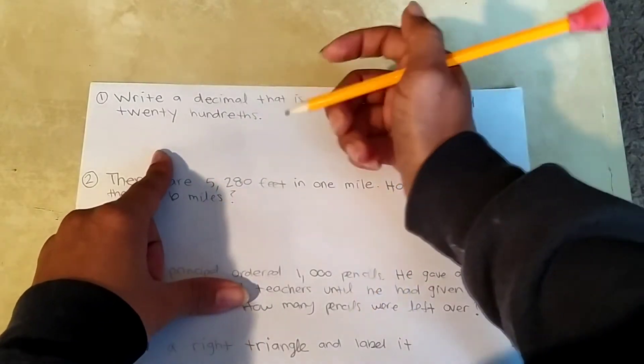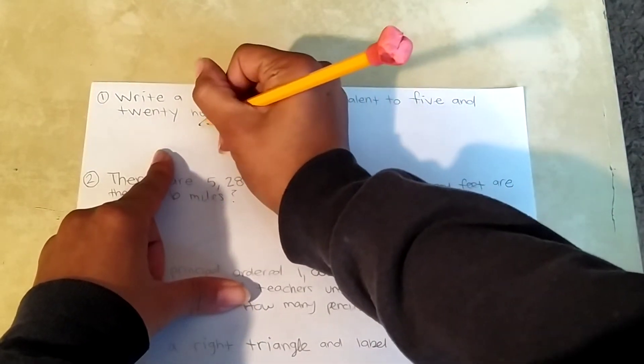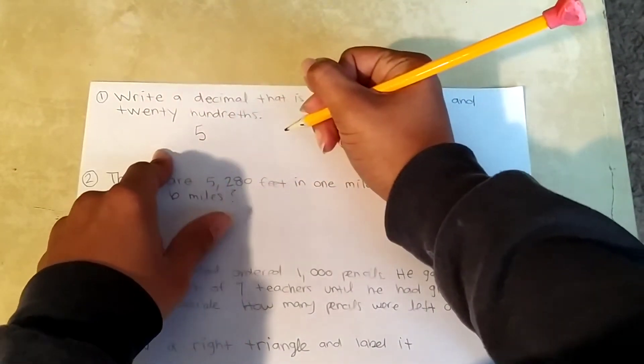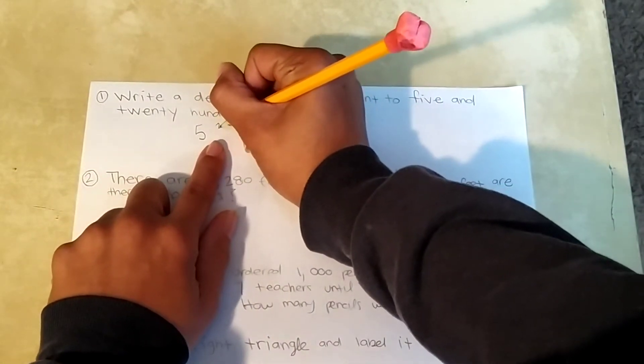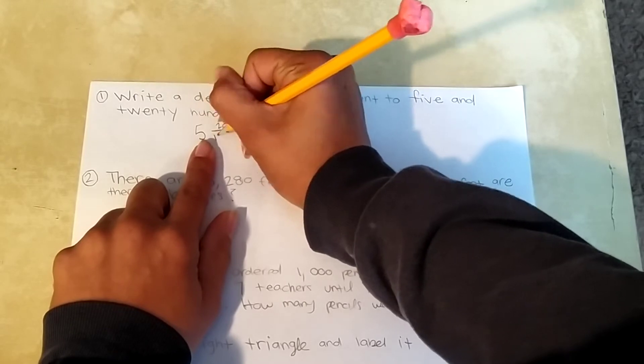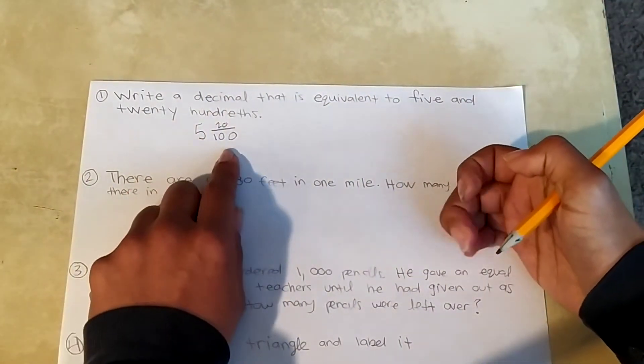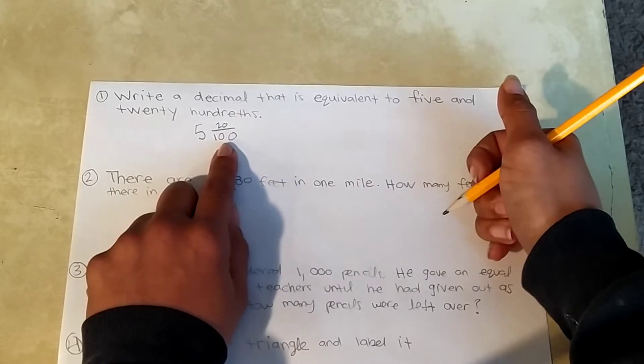So 5 and 20 hundredths. So I write my 20 and my hundredths. Okay, and now we need to change this into a decimal.